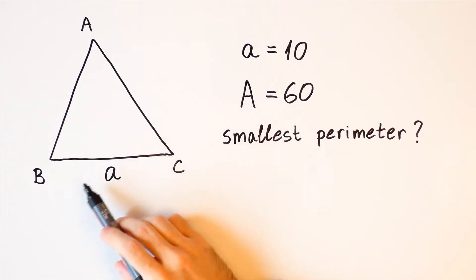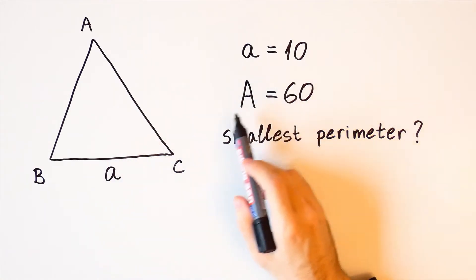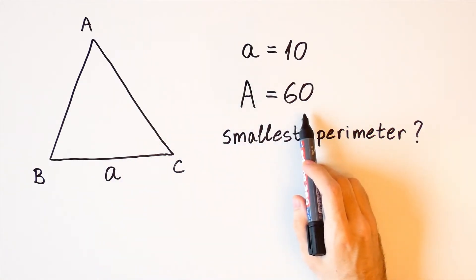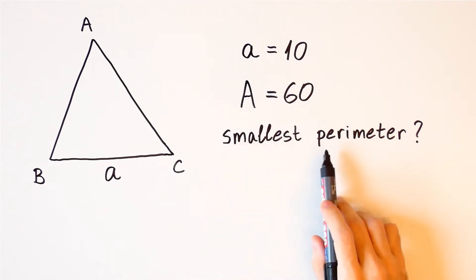Here we have a triangle whose one side is equal to 10 and the area of the triangle is 60. What is the smallest possible perimeter of such triangle?